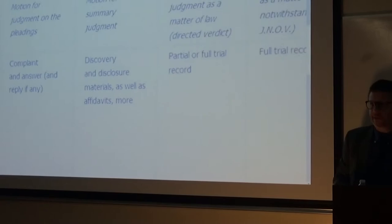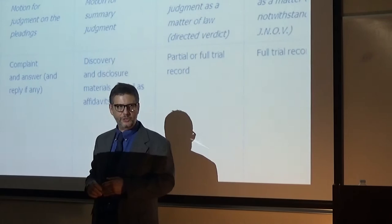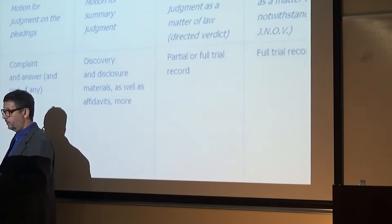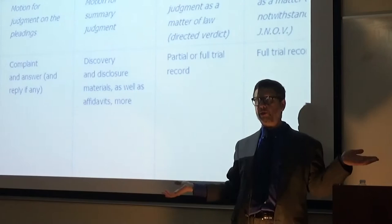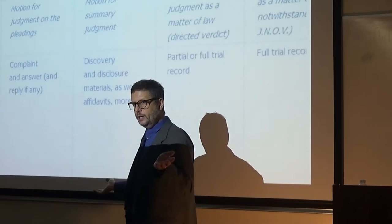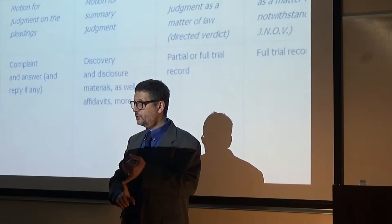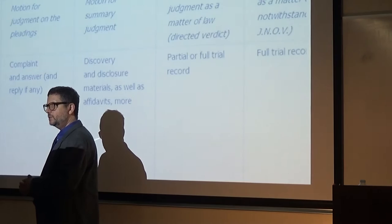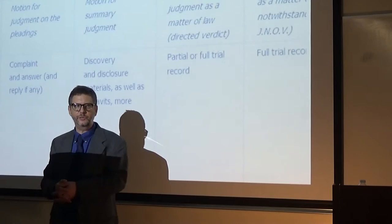A Rule 56 motion for summary judgment can in theory be sought very early in the litigation, but as a practical matter it's not appropriate until the parties have had an opportunity to do affidavits or even discovery. The scope of materials reviewed in a summary judgment motion is much broader than in a 12B6 or 12C. Rule 56 looks at affidavits, deposition testimony, documents produced, interrogatory answers, admissions in response to requests for admissions, medical exams — in other words, affidavits plus lots of discovery materials.